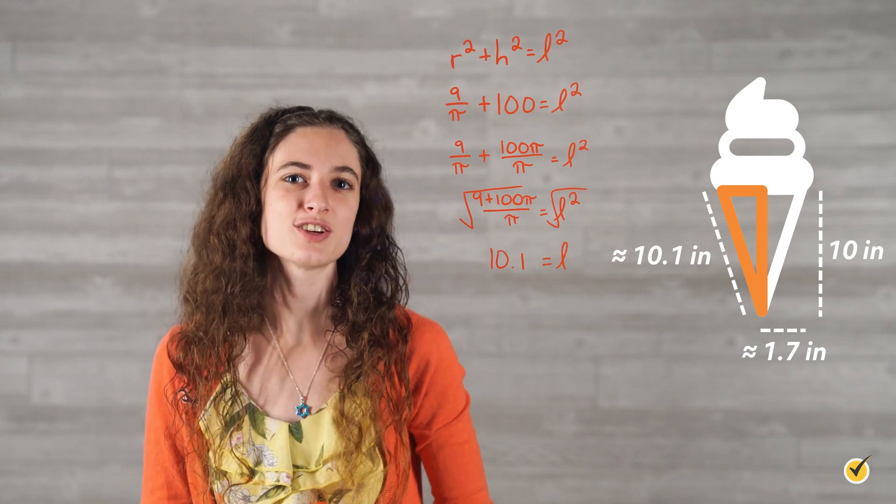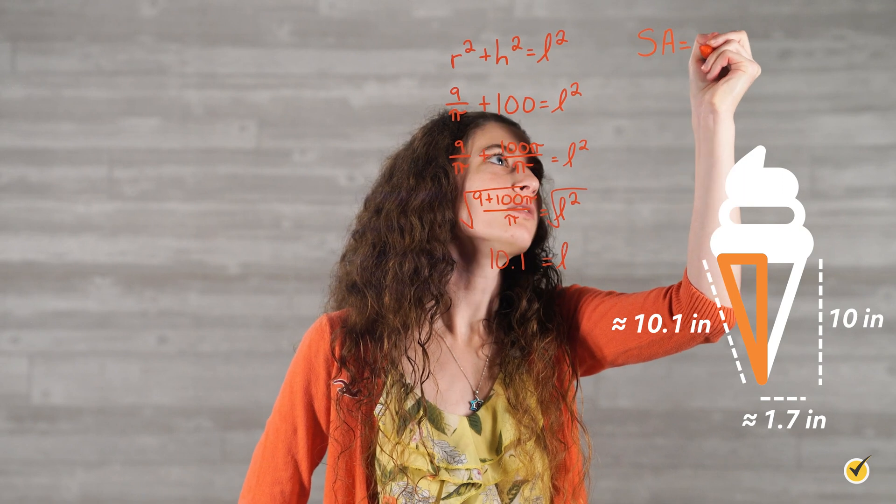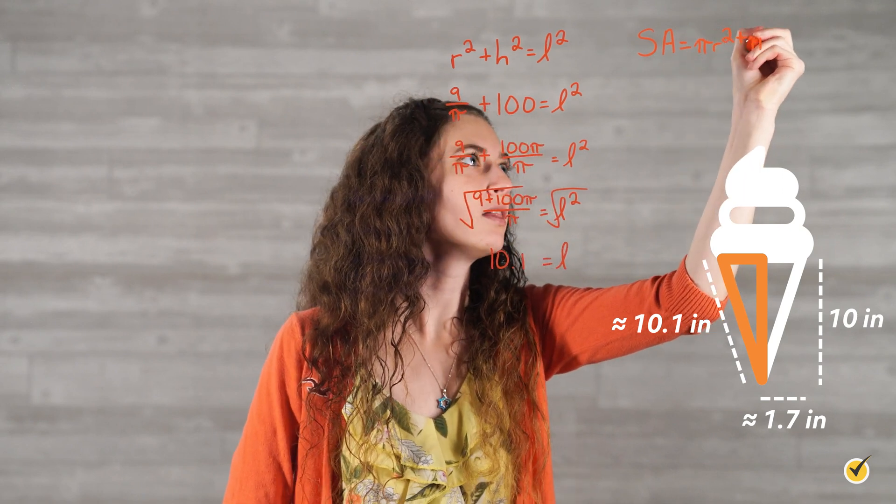Awesome! Now, let's use this to find the surface area. Surface area is equal to pi r squared plus pi r l.